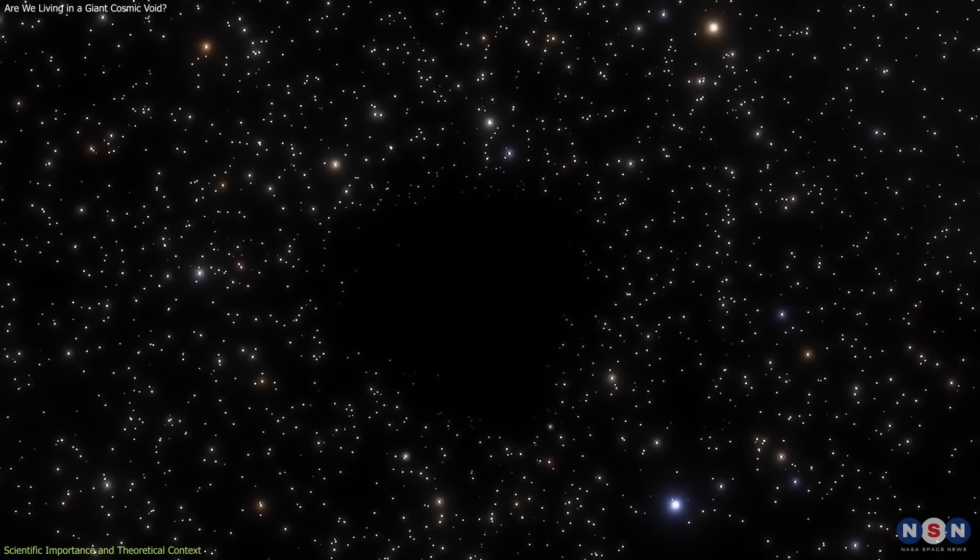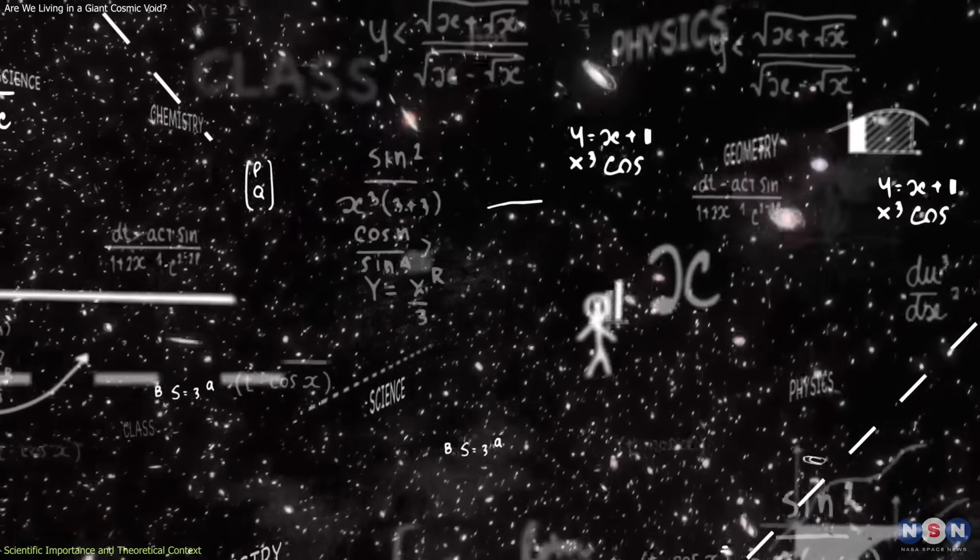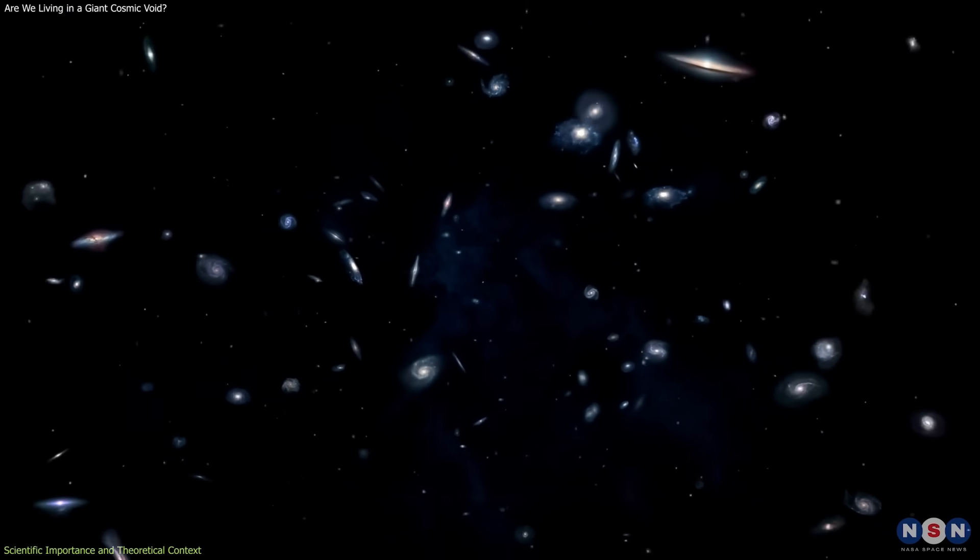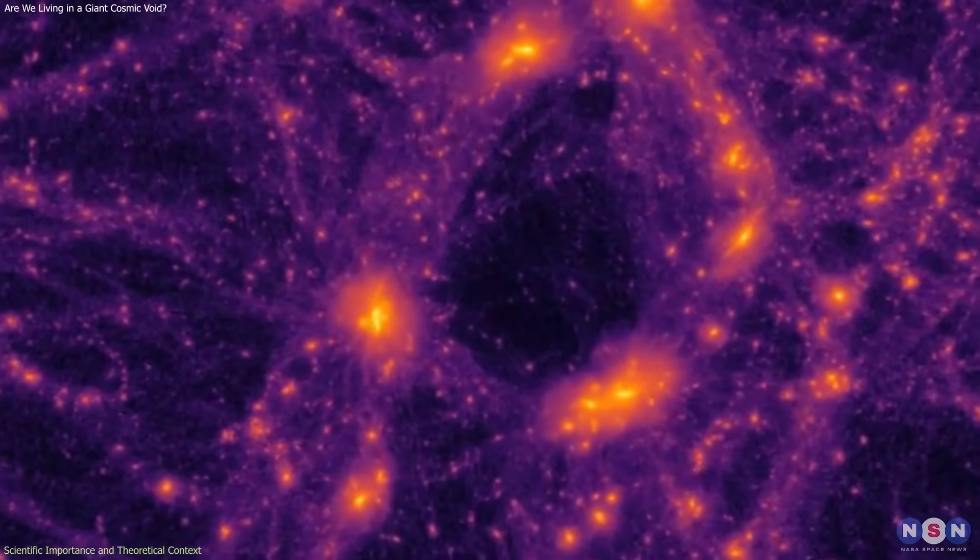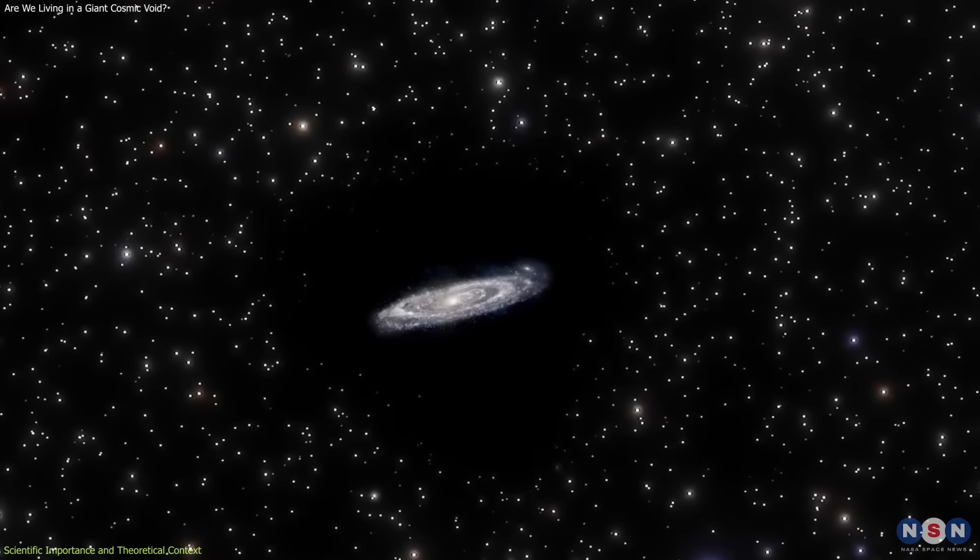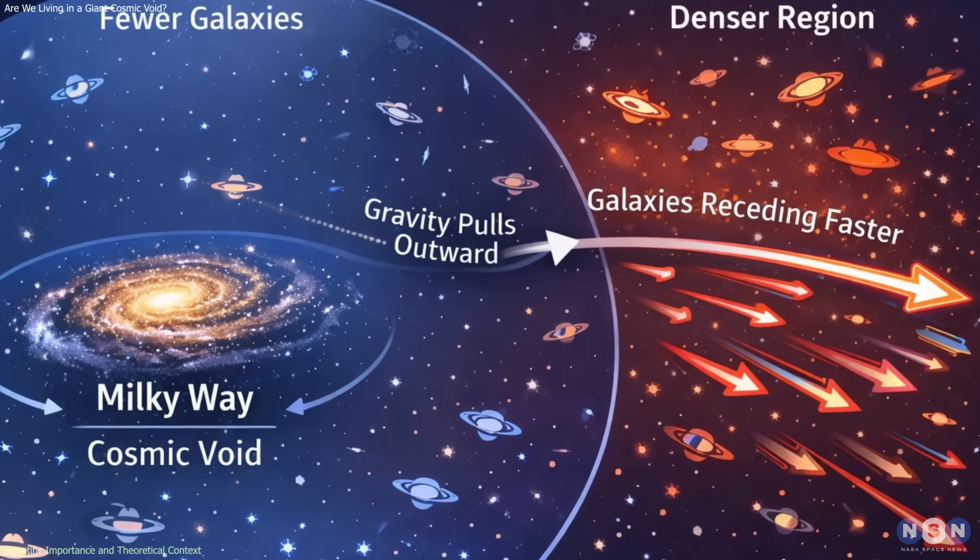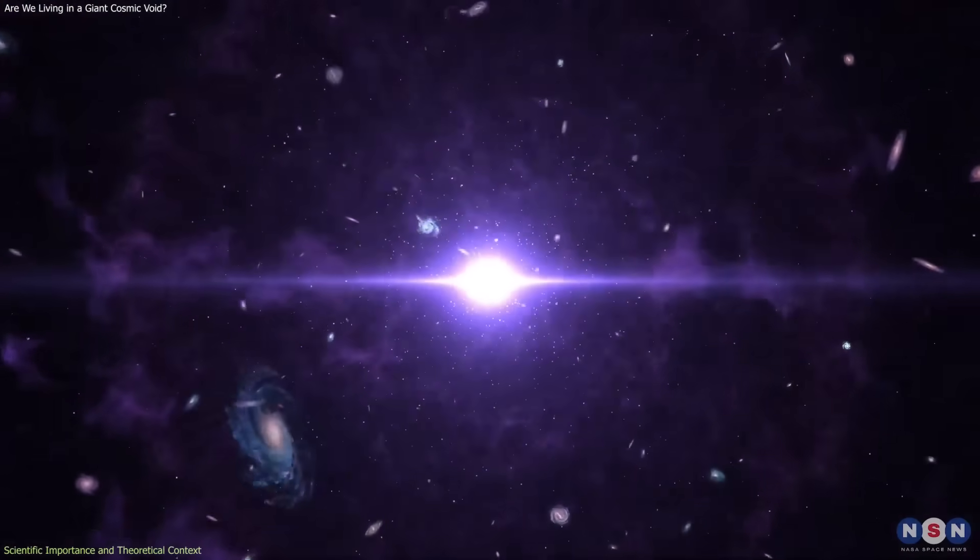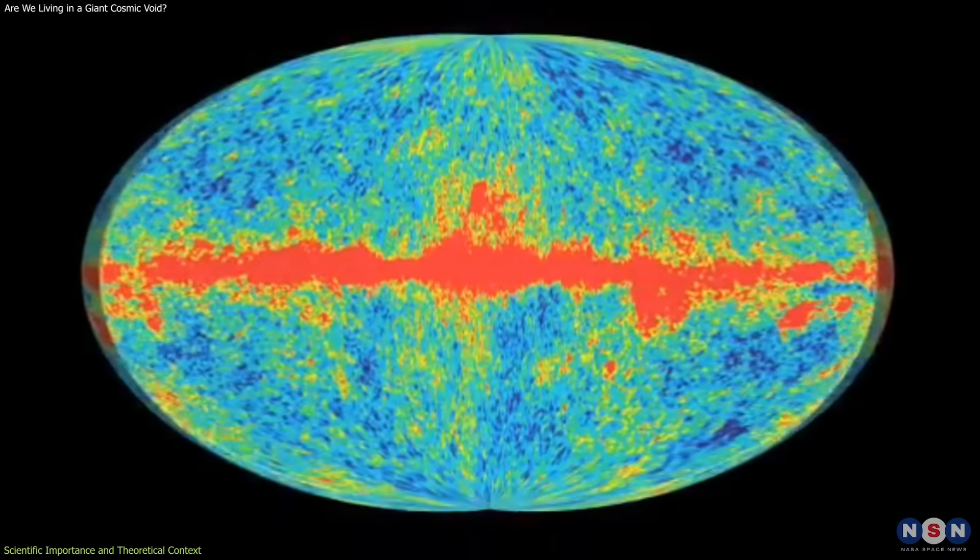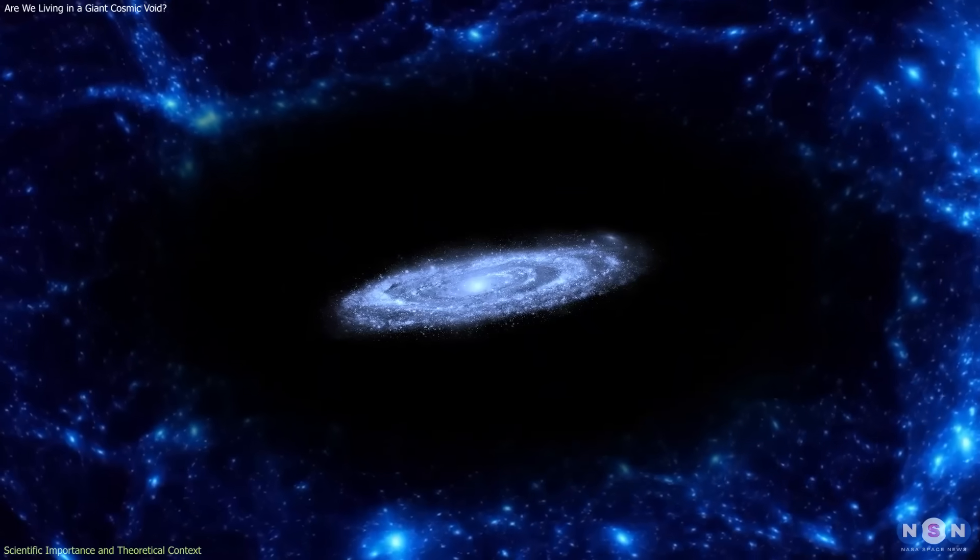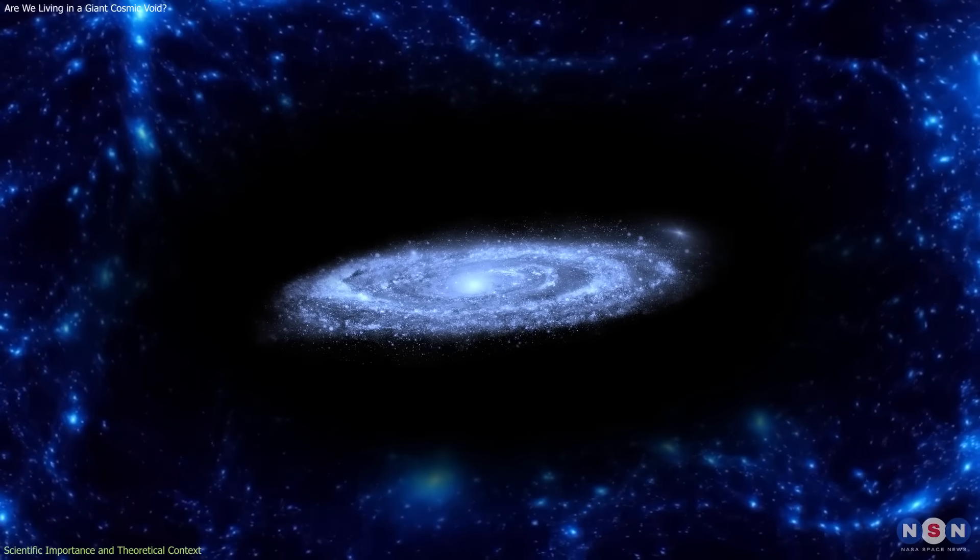The void hypothesis takes a different route. Rather than changing the laws governing the universe, it questions whether local observations can be directly compared to global predictions without accounting for environment. If we are located within a large, underdense region, local measurements of expansion would naturally appear higher. The universe would still follow the same global expansion history inferred from early universe data, but observations made from inside the void would be biased by large-scale matter flows and gravitational effects.